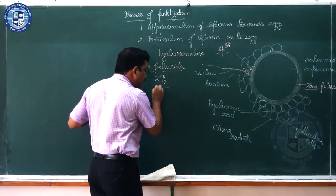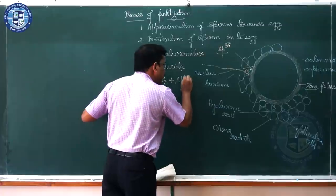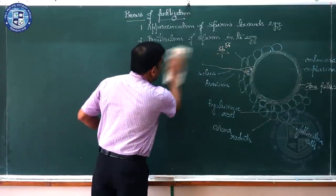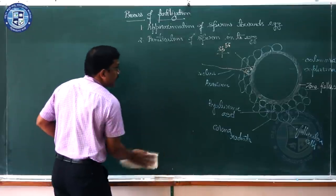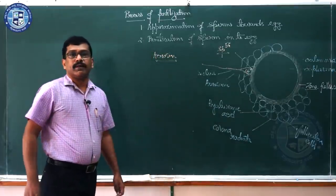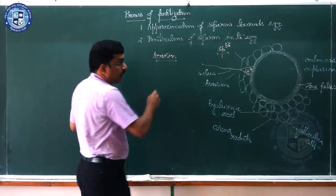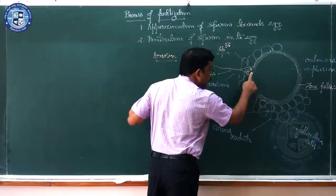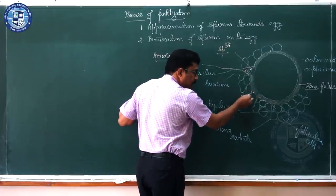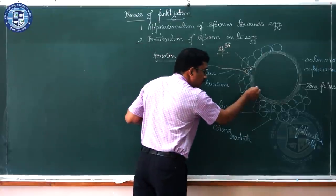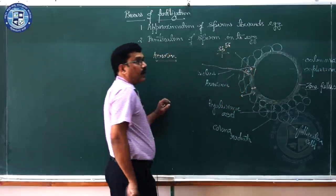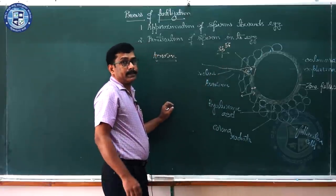Once attachment takes place, the acrosome releases another enzyme called acrosin (also called sperm lysin), which digests the zona pellucida. To summarize: corona radiata is digested by hyaluronidase; zona pellucida is digested by acrosin. The sperm head then comes in contact with the oolemma.